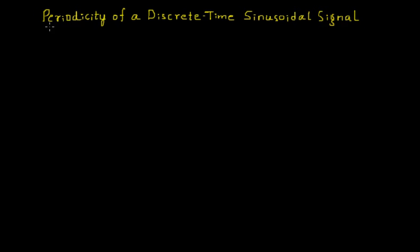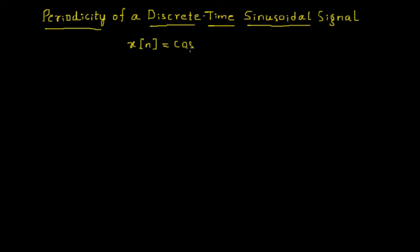Welcome to the video lecture on the periodicity of a discrete-time sinusoidal signal. In this video we'll test whether a given discrete-time sinusoidal signal is periodic or not, and if periodic, what is the fundamental period. To test that, we'll consider a discrete-time sinusoidal signal X(n), which is equal to cos(ωn). Since ω = 2πf, we can write this as cos(2πf·n).